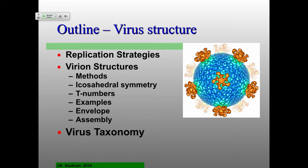Most of the time today we're going to talk about virus structures. This is one of my favorite virus structures — it's beautiful, and I discovered that virus. We'll also talk a little about replication strategies — this is a very broad-brush kind of thing. In terms of virus replication, there are really six different ways that viruses replicate, also called the Baltimore classes of virus. We'll go through those in quite a bit of detail, then move on to how to determine structures of virions.